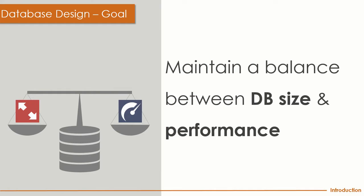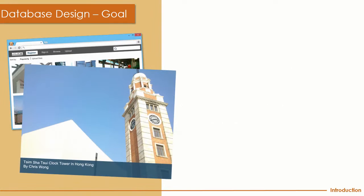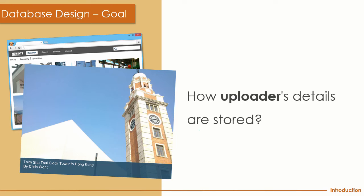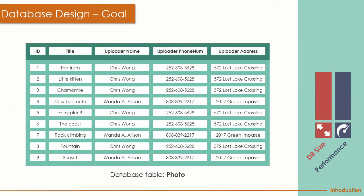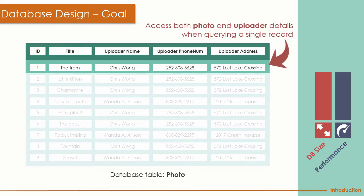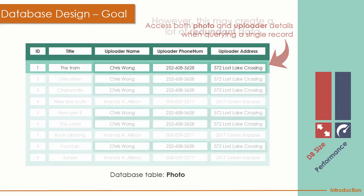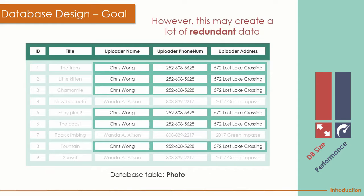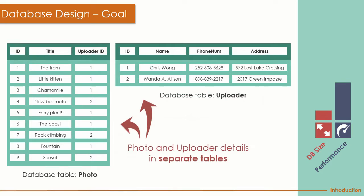A good database design maintains the balance between database size and performance. For example, with a photo and its upload detail, you can save everything in a single table. The benefit is you run a single query with no joins to get the upload information together with the photo. But the problem is you may create a lot of redundant data — you will see 'Chris Wong' repeated many times along with other duplicated data.